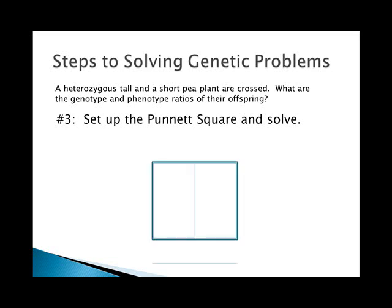You set it up as a two by two square. Put the first parent on top and the second on the side. Then bring the column headings down — put the big T in the two boxes on the left and the little t in the two boxes on the right — and then bring the row headings across, bringing that little t across both rows.